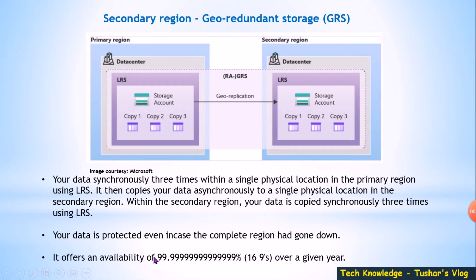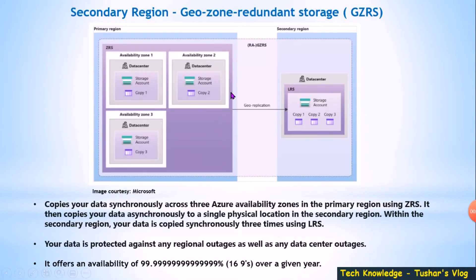The availability offered for GRS is 99.69% over a given year. The last option is Geo Zone Redundant Storage (GZRS), which is similar to ZRS — your data is written three times across three data centers in one region, and then also copied to a secondary region in a single data center, which would have three copies. So in all, you will have six copies. This also offers an availability of 99.69% over a given year.